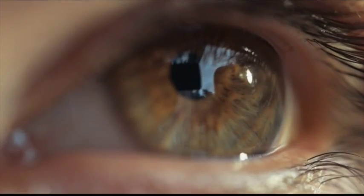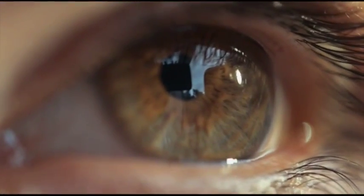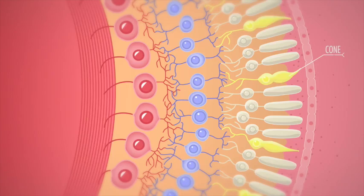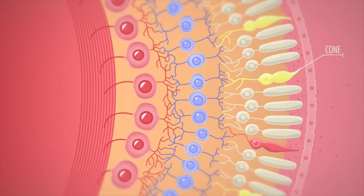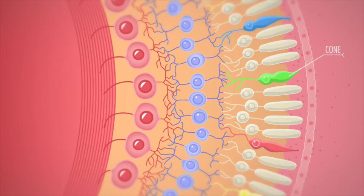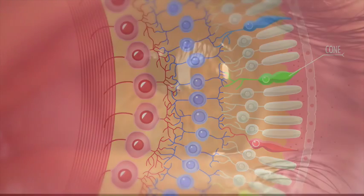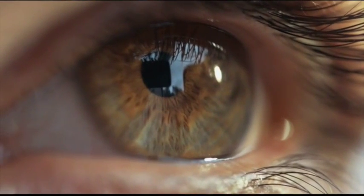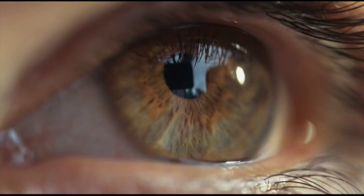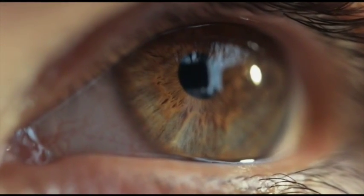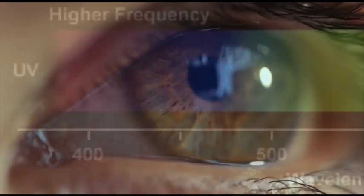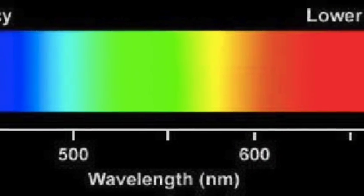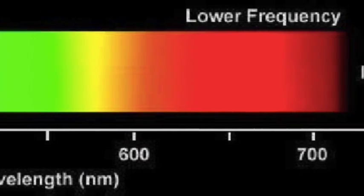Photoreceptors, known as rods and cones, are part of the retina and allow colour vision as well as low and high light imaging. There are three types of cones: short wavelength, medium wavelength, and long sensitive cones. These are responsible for giving vision in high light environments. Each cone has around 100 different colours, and hence we can measure the total number of colours that the human eye can see, which is around a million.